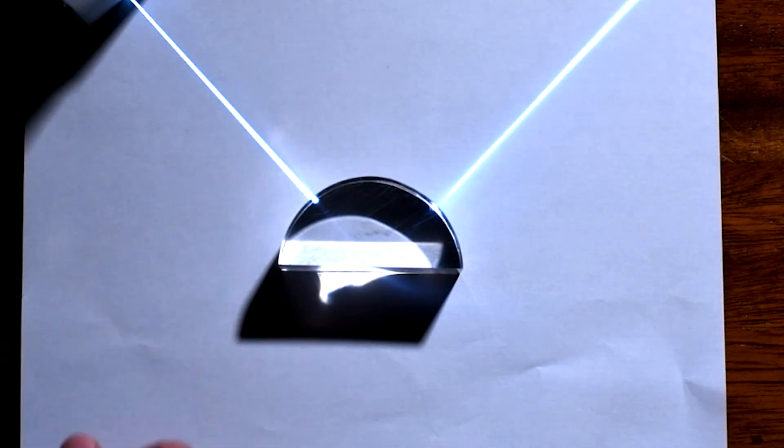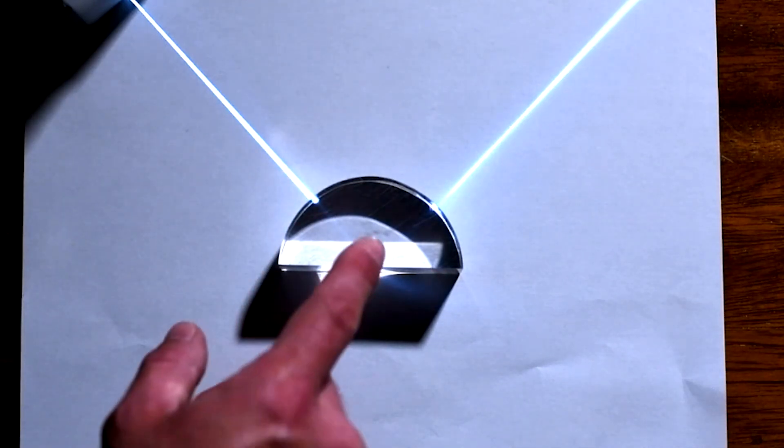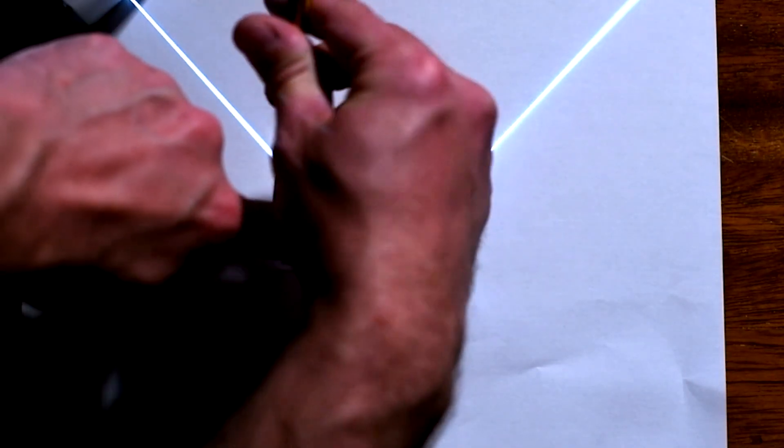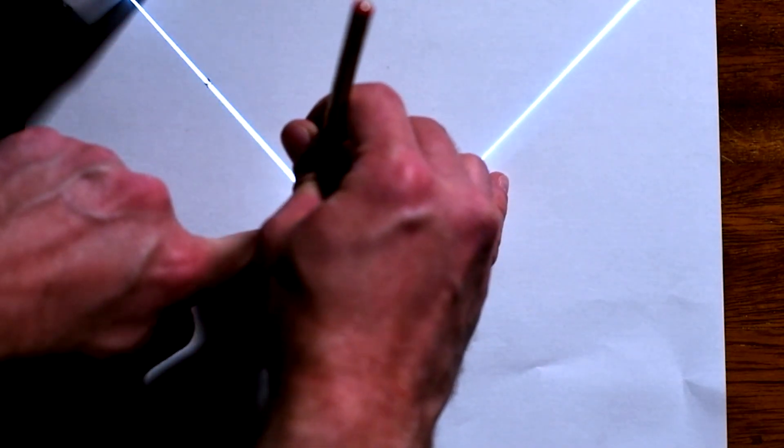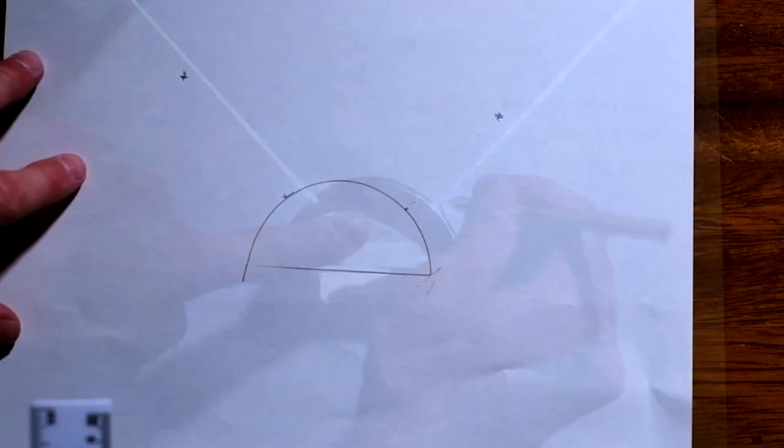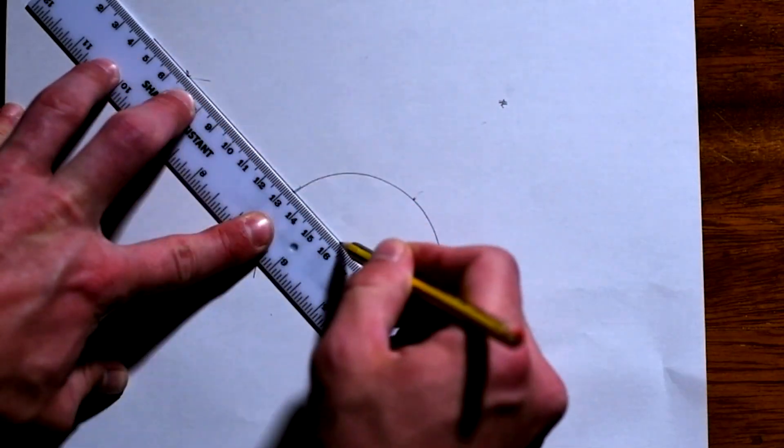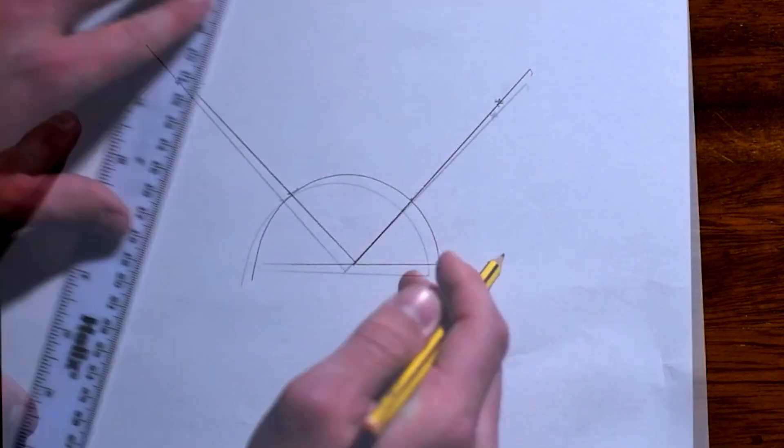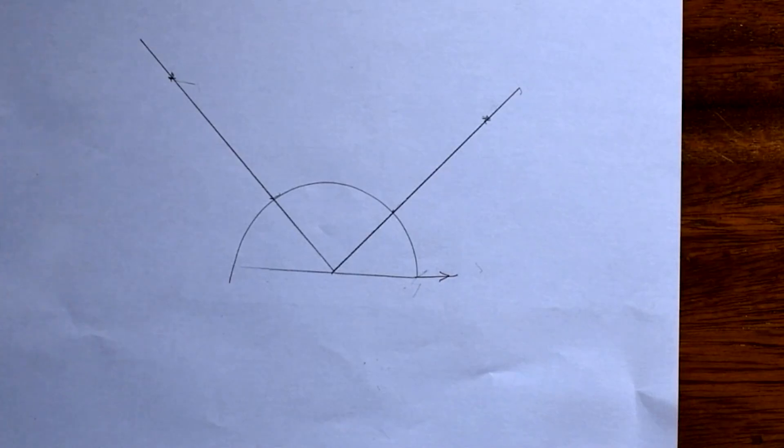Now, this happens at a very specific angle for each material. So let's find out what the angle of incidence is for the light hitting the flat side of the block. I'm going to draw around my block. I'm going to draw two little crosses where the light is going in. Then I can join them up.